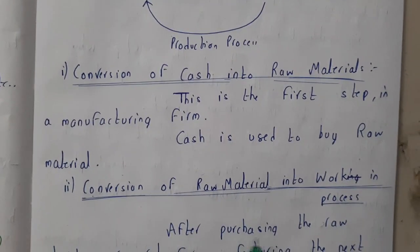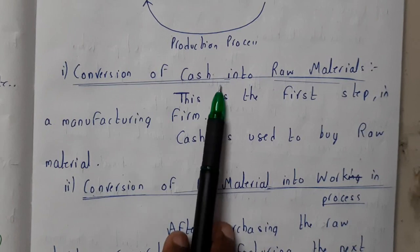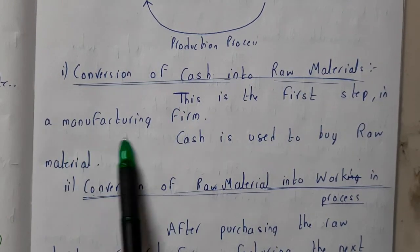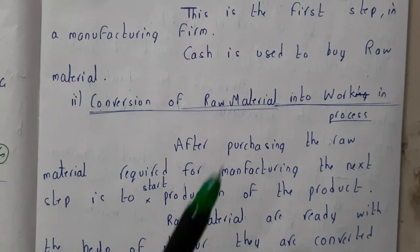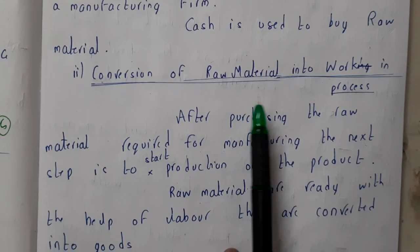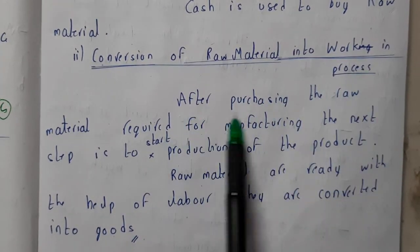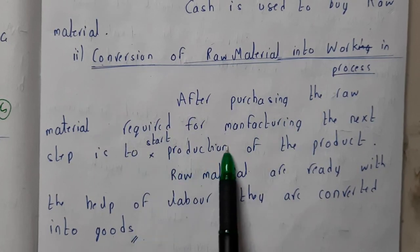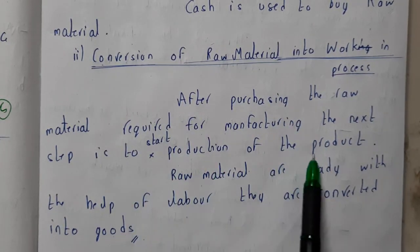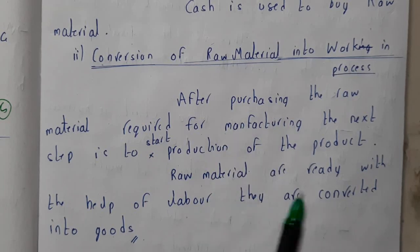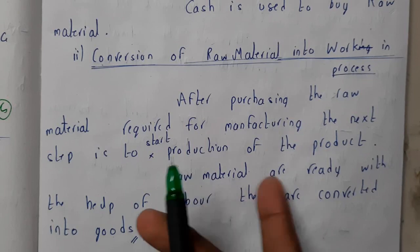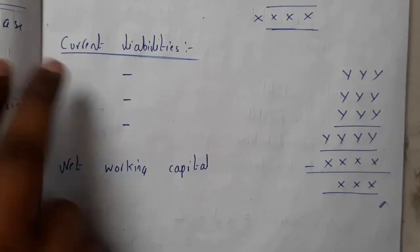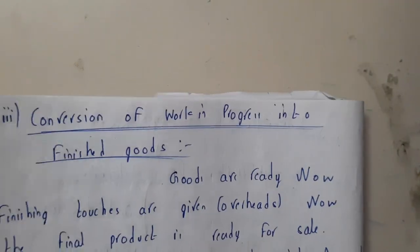Now let us go through the theoretical explanation. The first step is the conversion of cash into raw materials. In a manufacturing firm, cash is used to buy raw materials. The next step is conversion of raw materials into work in progress — after purchasing raw materials, production starts, and with the help of labor they are converted into goods.